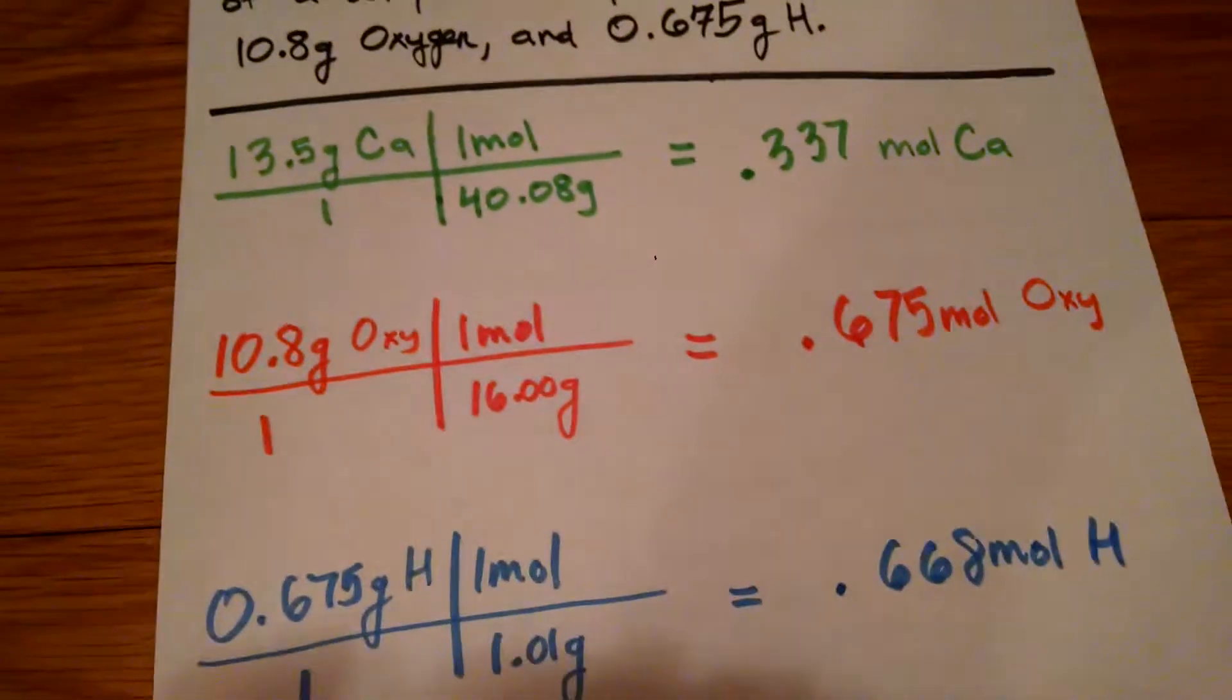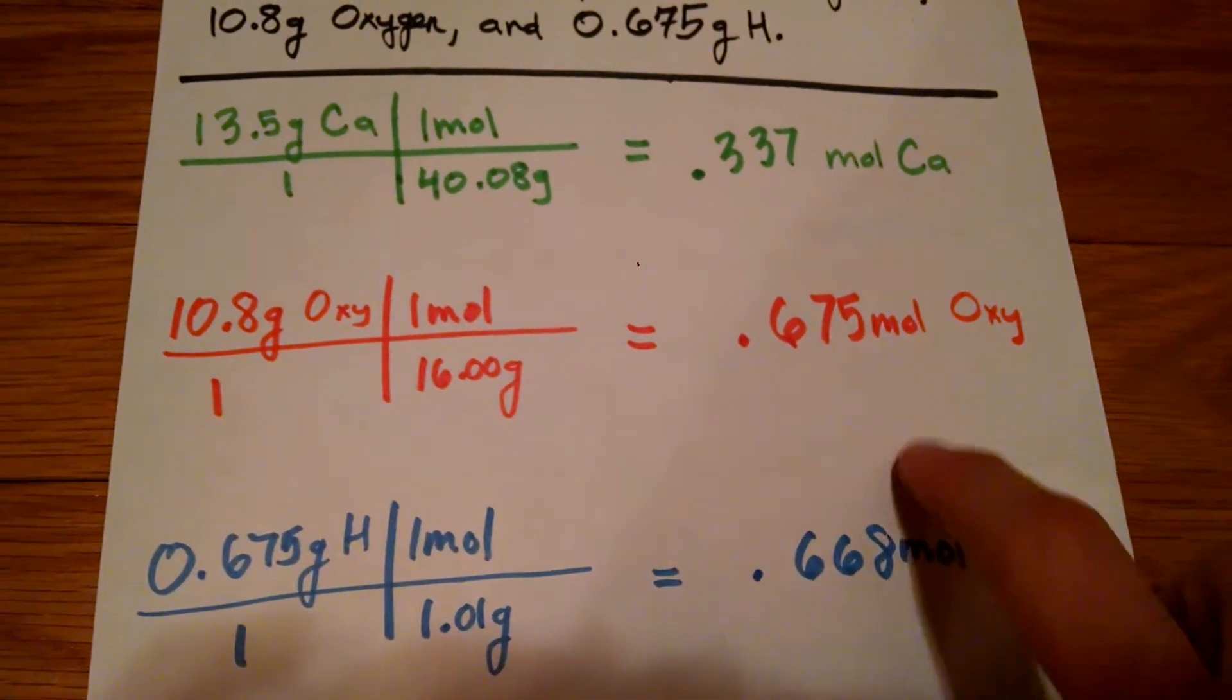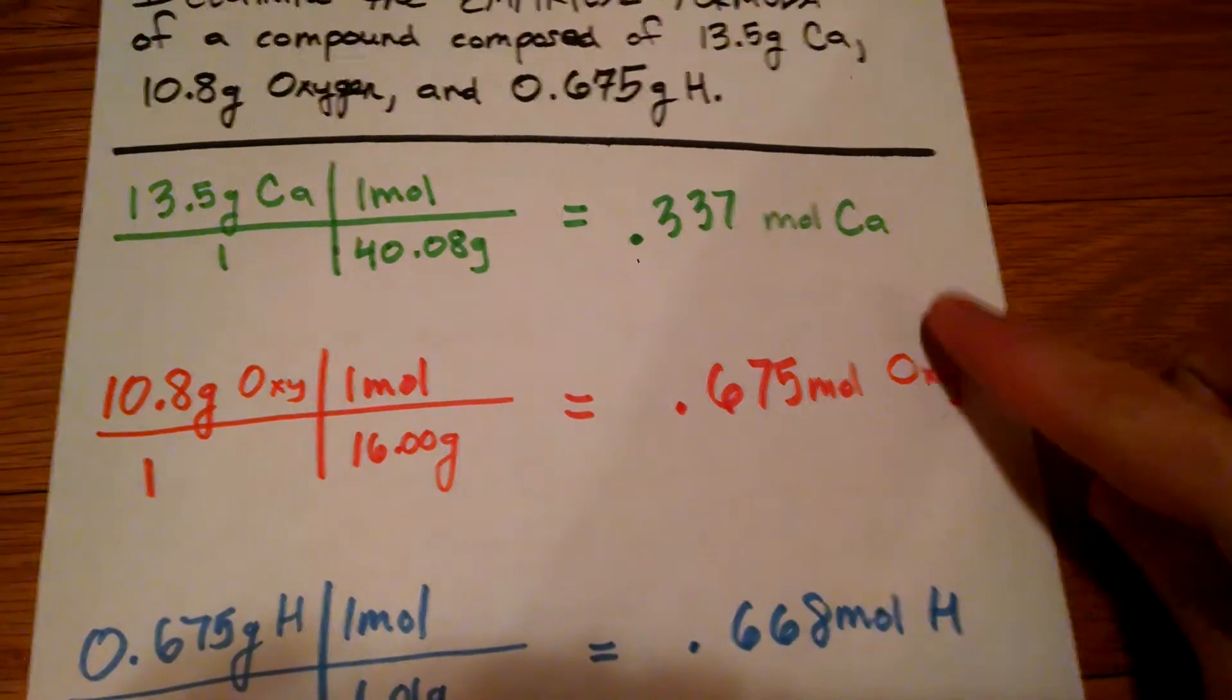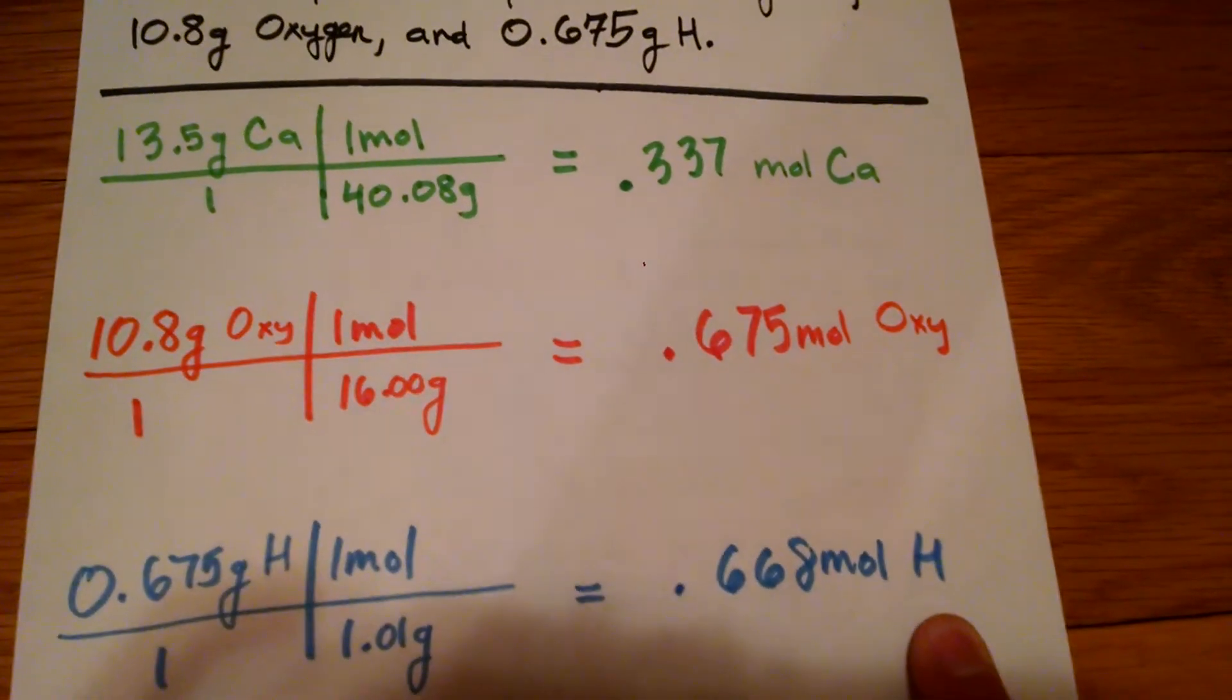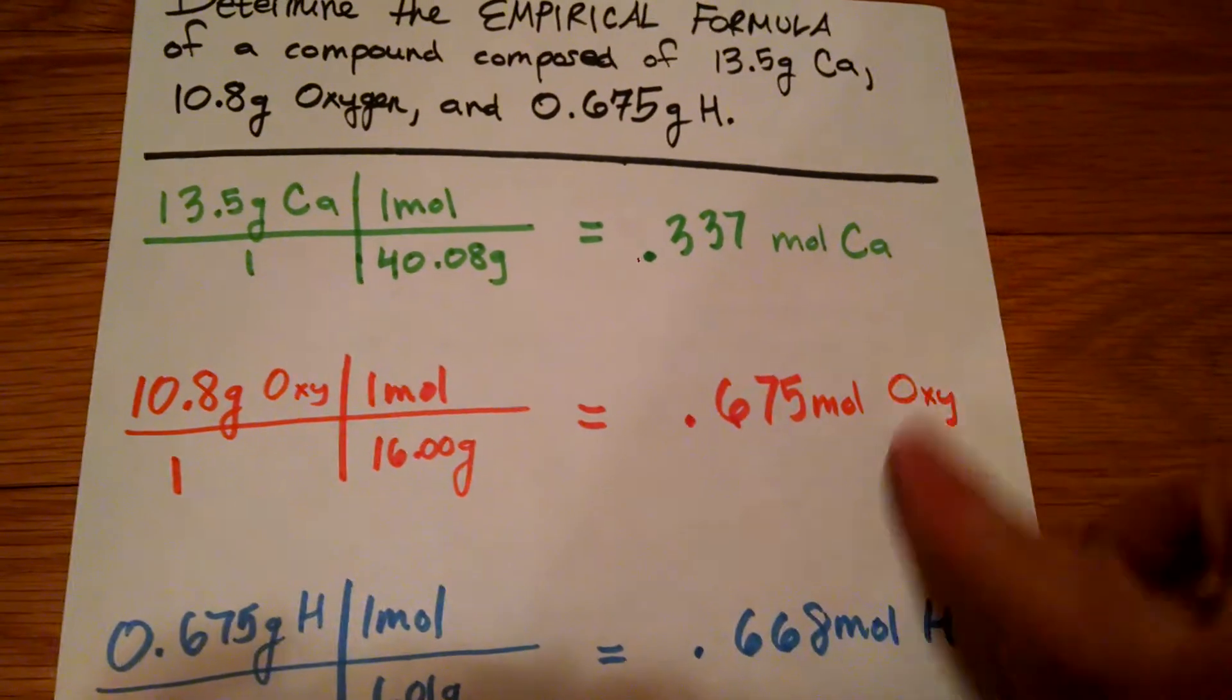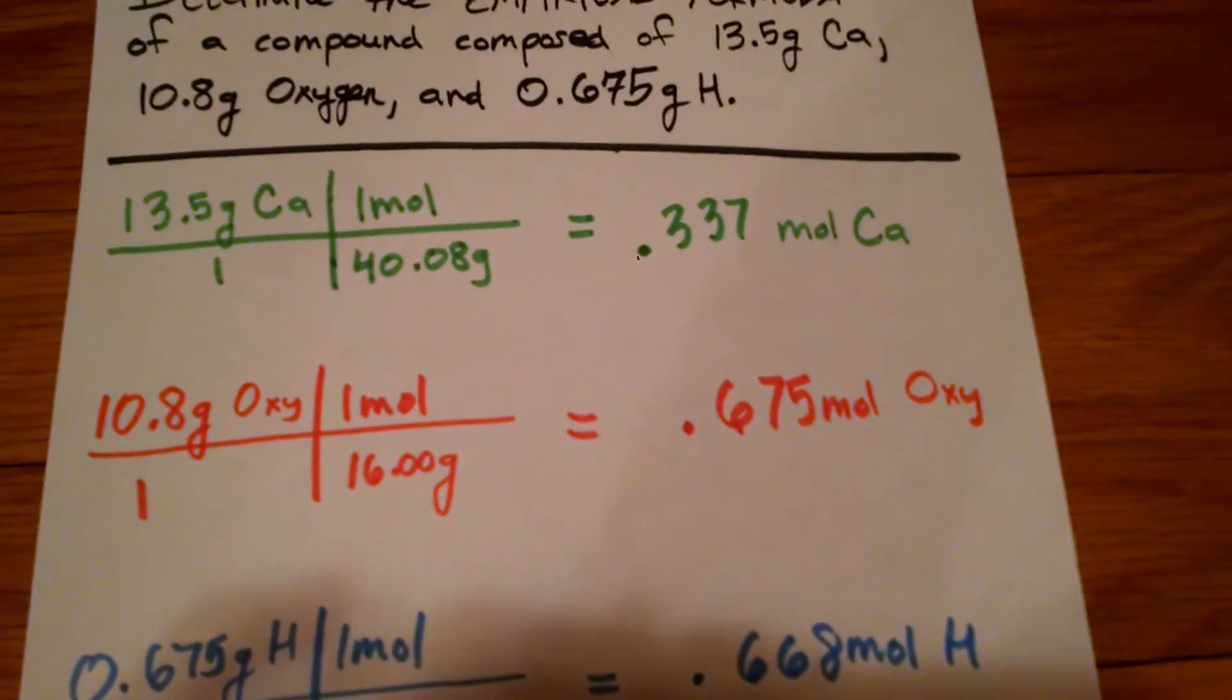So what does this mean? Well, our mole ratio for this compound is 0.337 moles of calcium to 0.675 moles of oxygen to 0.668 moles of hydrogen. That's an awful way to show a ratio with all these decimals. So we're going to do it a better way by dividing each of these by the smallest mole amount.